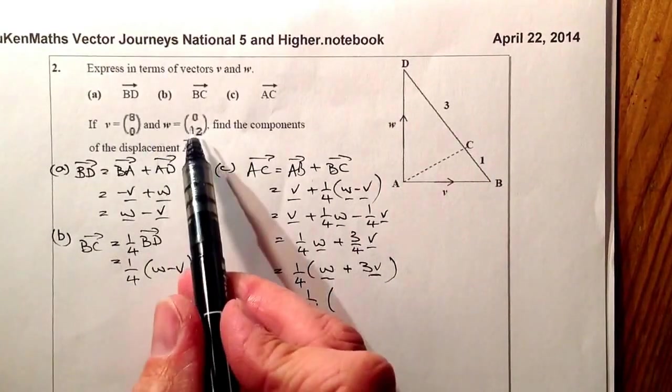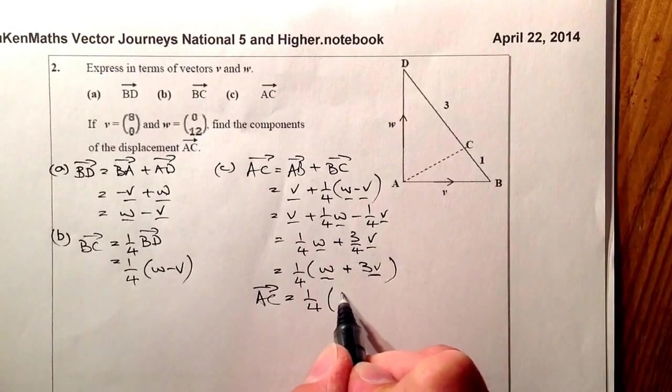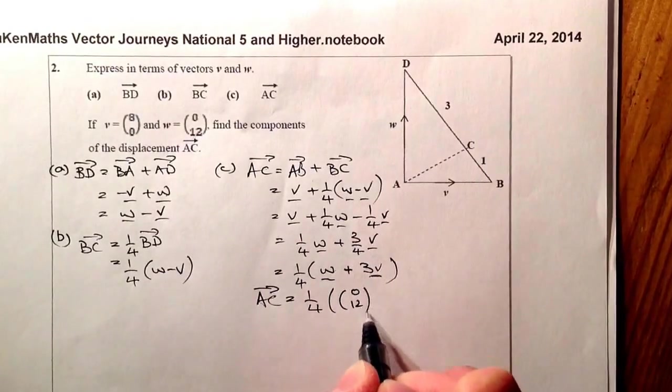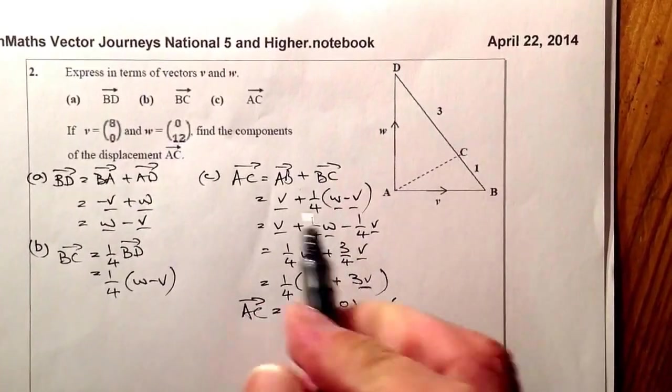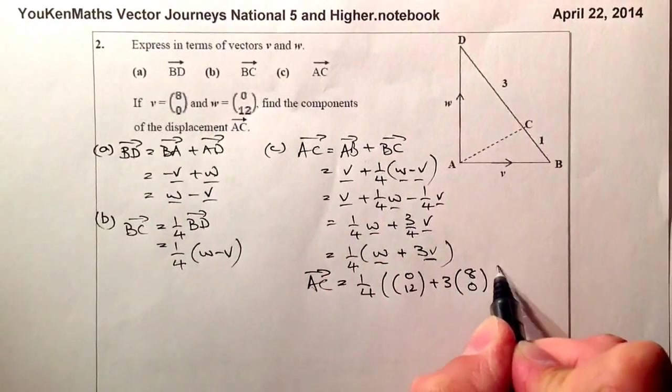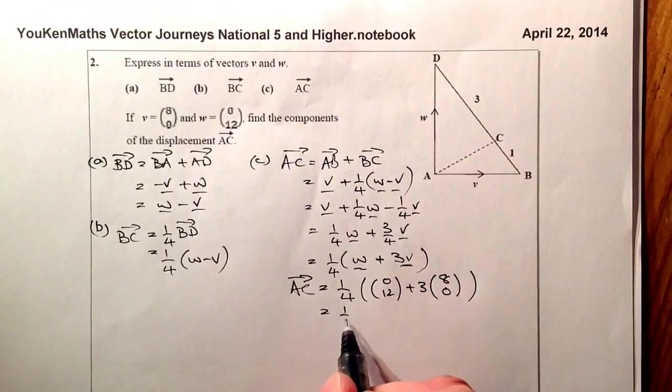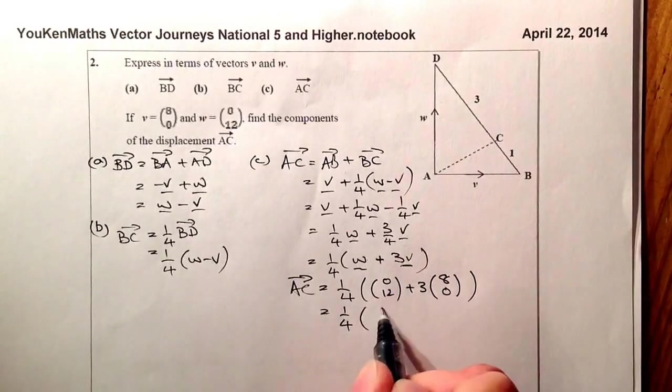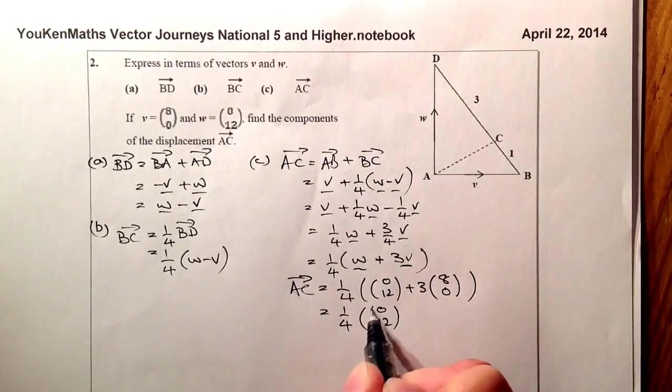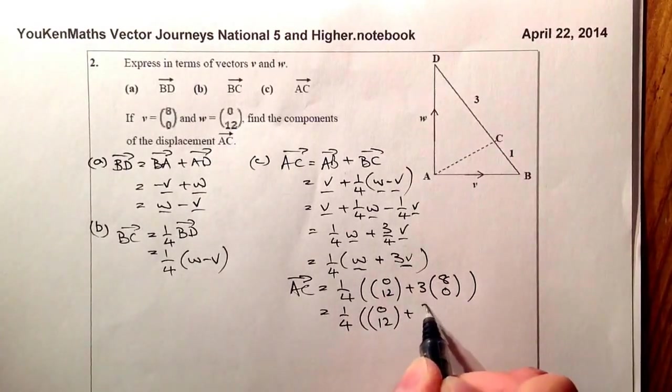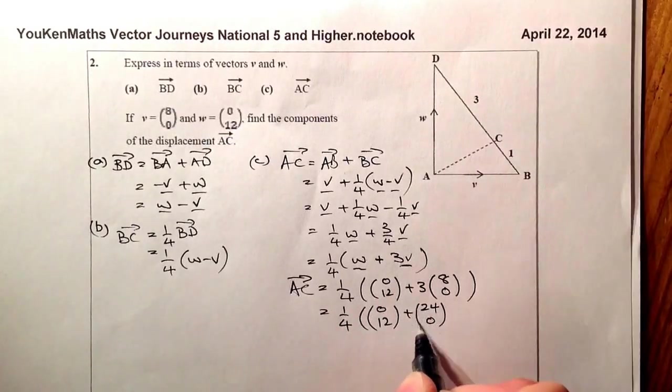W now is 0, 12, so that'll be 0, 12 plus three times the vector V, which is 8, 0. That'll be 0, 12 that's sitting here. Multiply that out, so that's going to give me 24 over 0. So, okay, that's this vector. Gathering these up together,